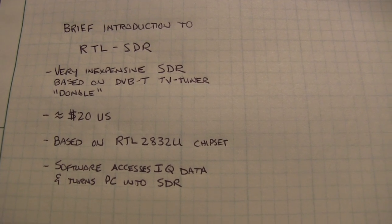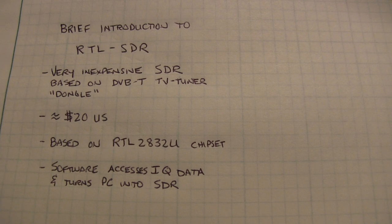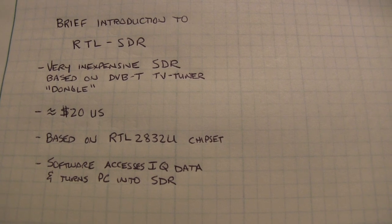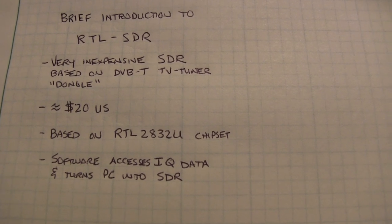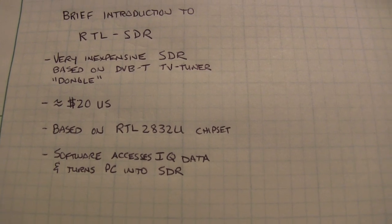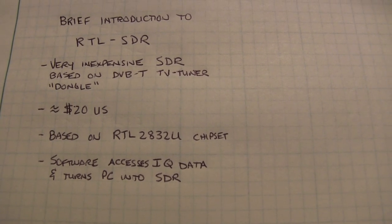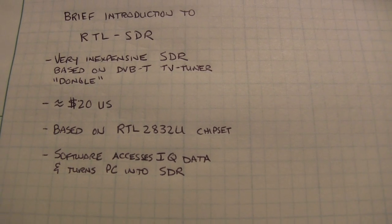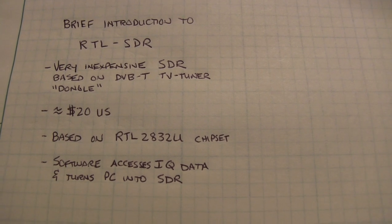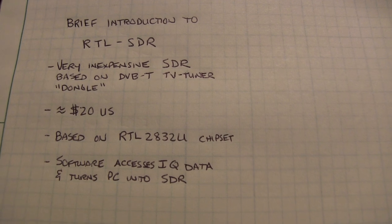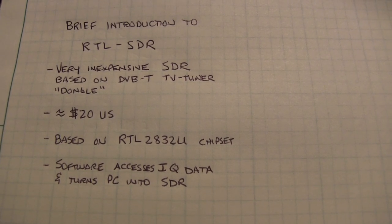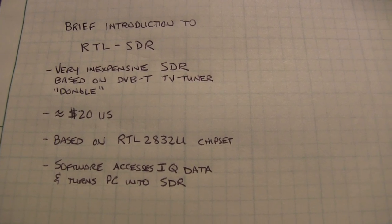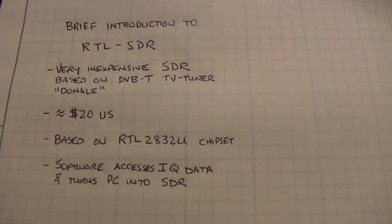Today's video is going to give a very brief introduction to an RTL-SDR. This is just a very inexpensive software-defined radio based on a USB dongle for a TV tuner for digital television broadcast. These are available online for as little as $20 or even less. The name RTL comes from the chipset used, and some very bright folks figured out that with software, they could access the IQ data being generated inside the chipset and really just turn your PC into a software-defined receiver that can do many, many functions.